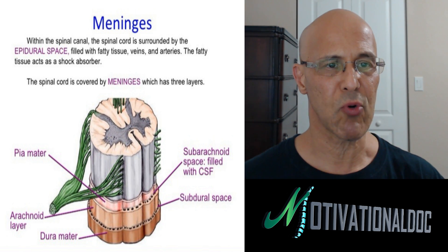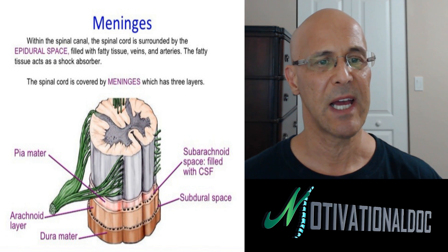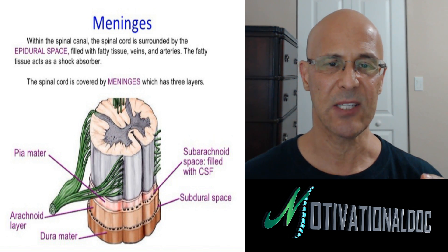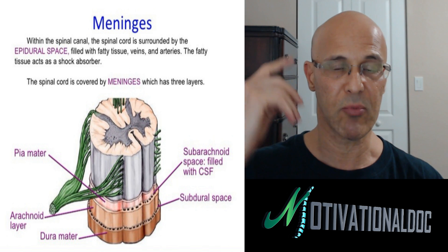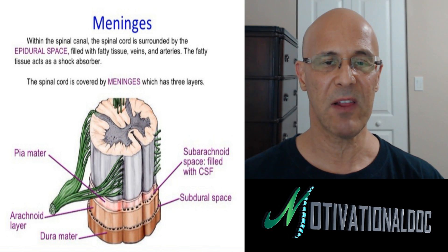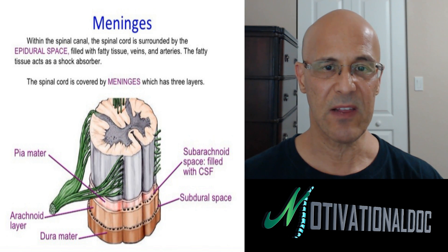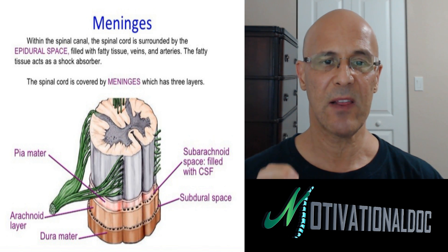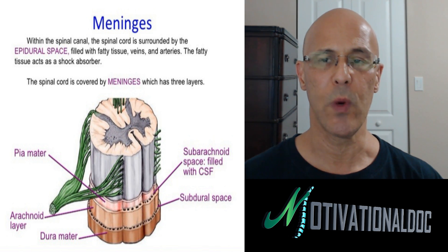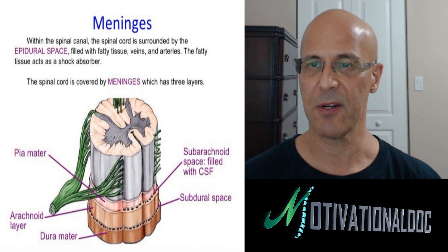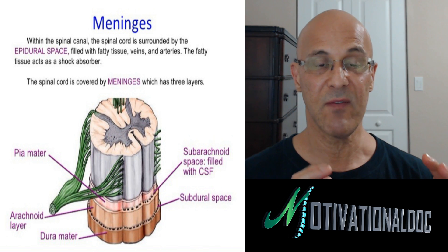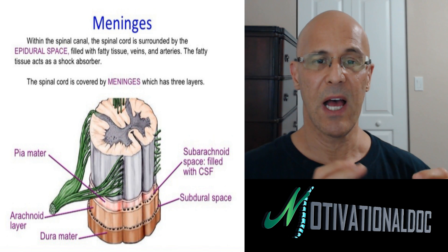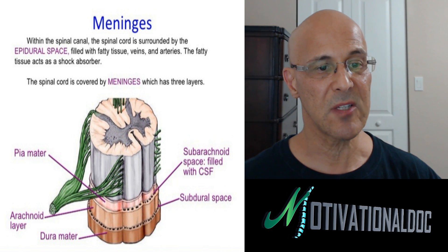Now let's look at this picture here with the meninges — just a quick little overview, a little bit of anatomy. The outside of the spine has three layers, as well as the brain, called the meninges. The inside layer is the pia mater. The second layer above is called the arachnoid layer or the arachnoid mater. And the outside layer is called the dura mater. We're concerned with this dura mater, which can develop tension.